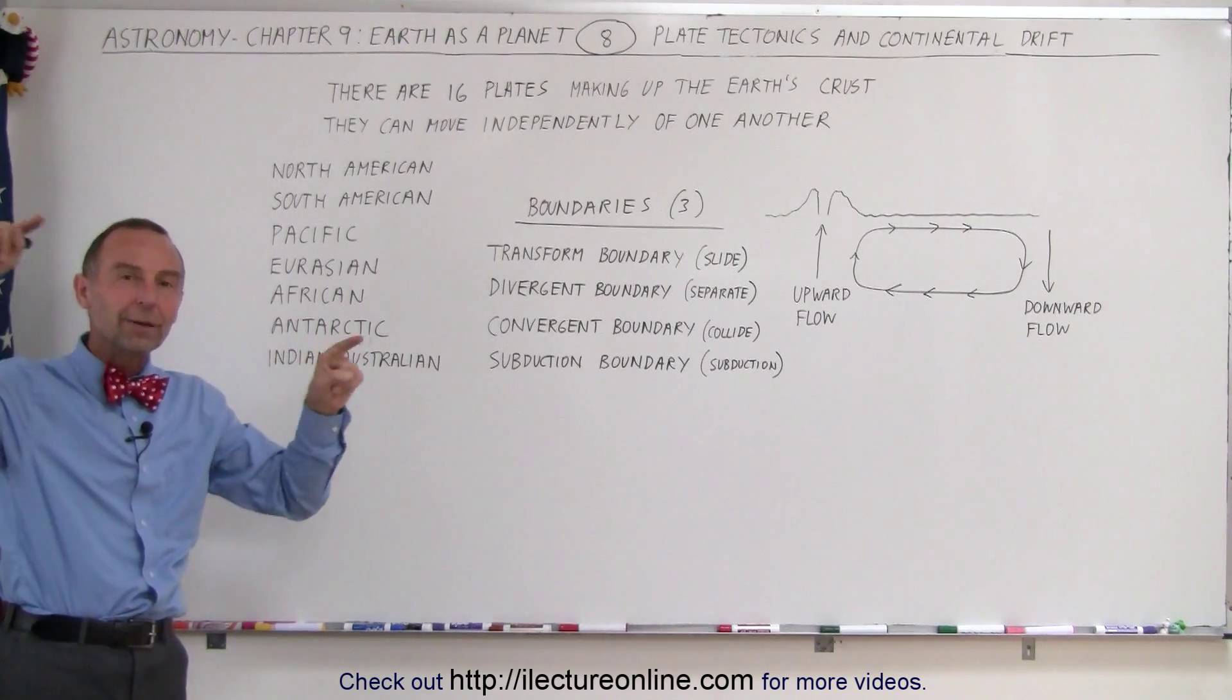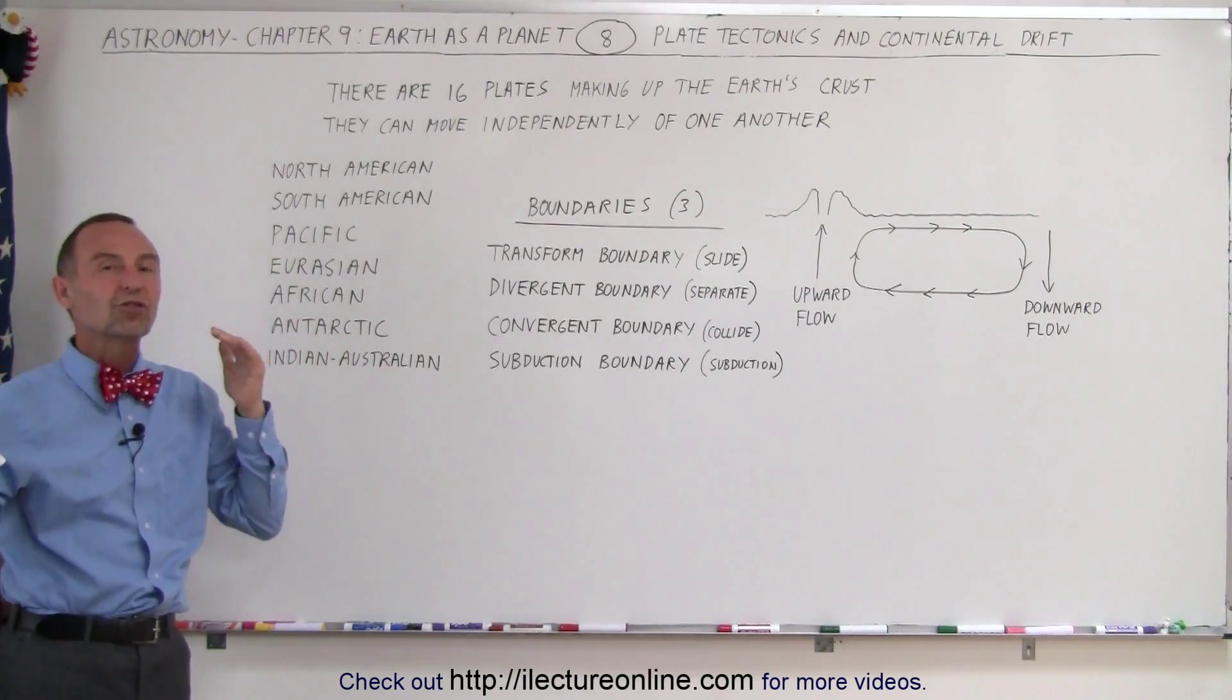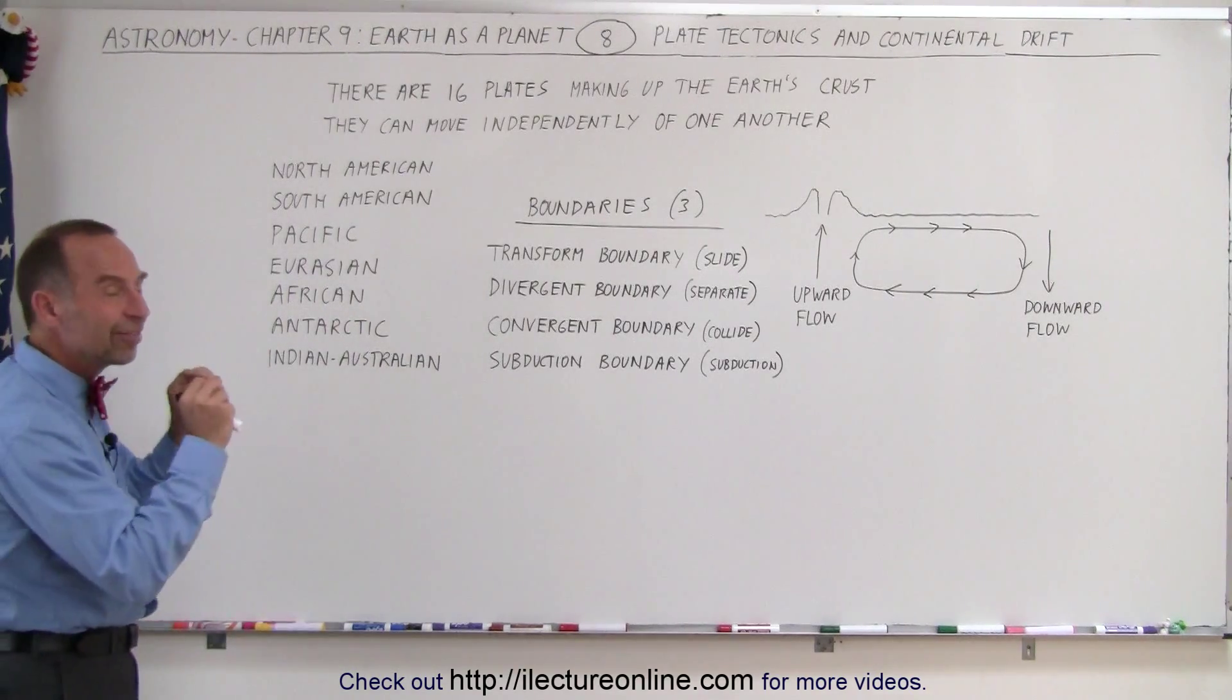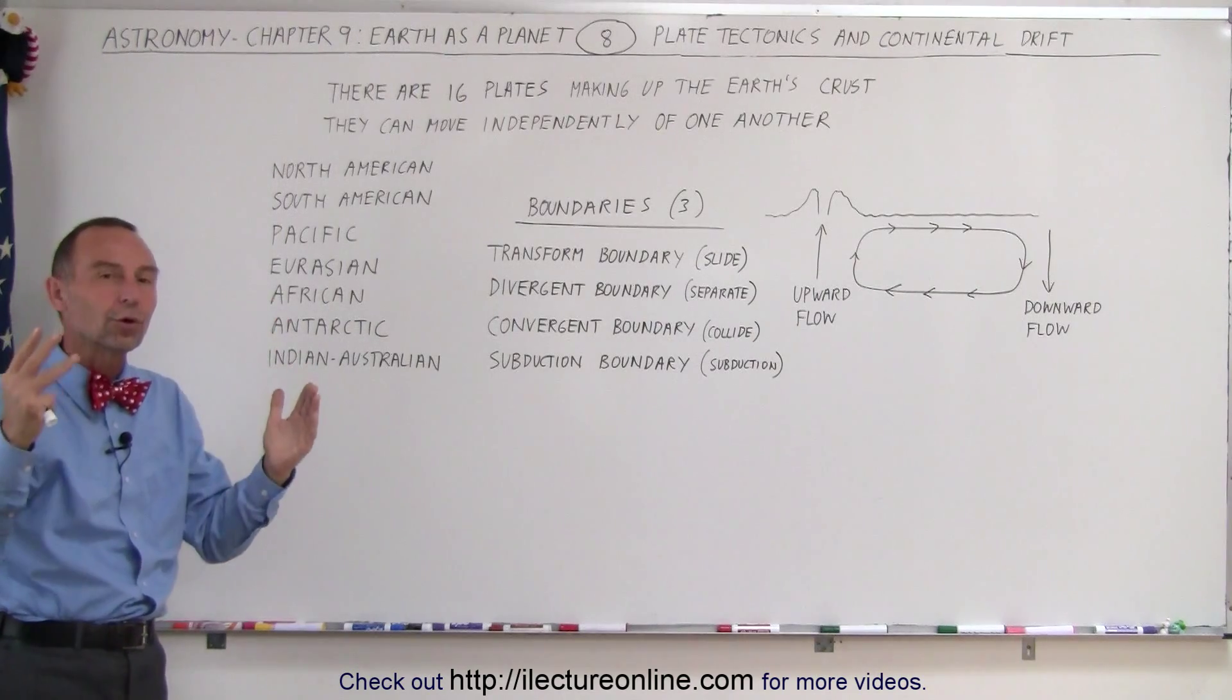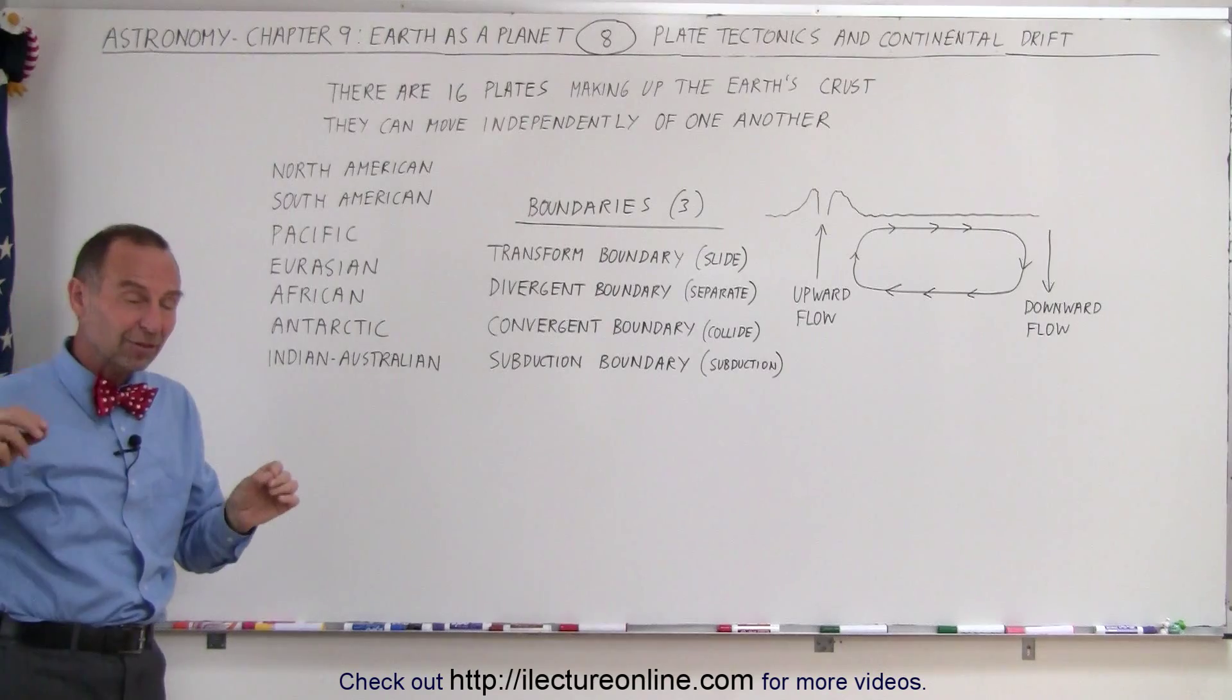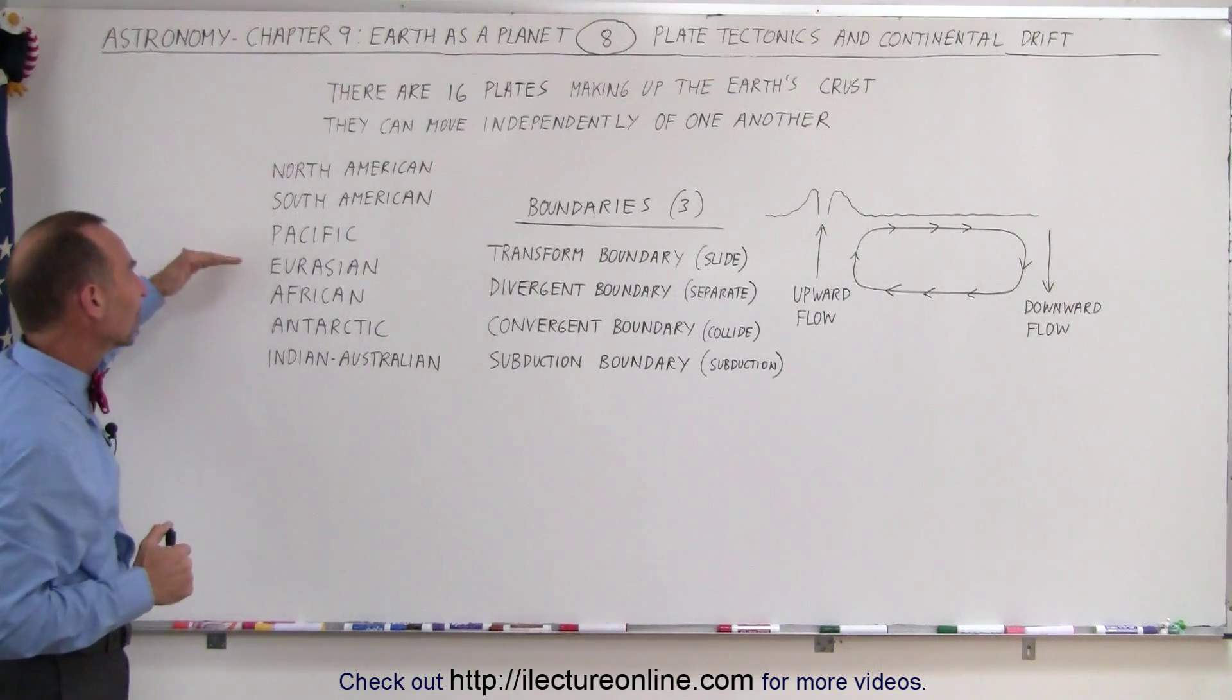Along that rim of the Pacific Ocean is what we call the ring of fire because there's so much geological activity with earthquakes and volcanic activity, tsunamis. That region of the world, that ring around the Pacific, is where many volcanoes exist and many earthquakes happen on a regular basis.